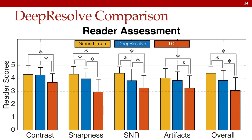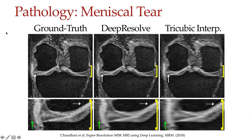In the reader study comparing ground truth, Deep Resolve, and tricubic interpolated images, for virtually all metrics the Deep Resolve method outperformed the current standard of interpolation. For some metrics such as sharpness, there are still significant differences between ground truth and Deep Resolve; however, exactly recreating the high resolution images wasn't necessarily the goal of the study. We wanted to see if we can do better than currently used interpolation methods, and the results were quite promising — with very minimal differences between the ground truth and Deep Resolve datasets.